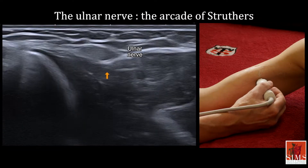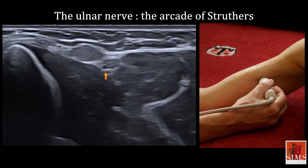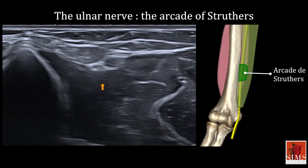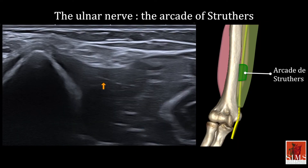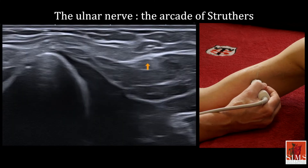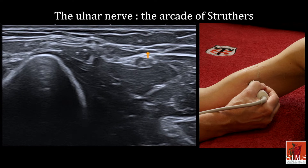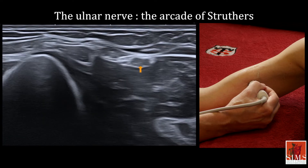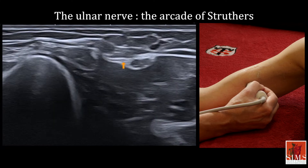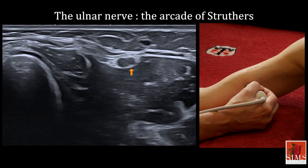Approximately 8 cm proximal to the medial epicondyle, some patients have a fibrous arcade called the arcade of Struthers, which has nothing to do with the ligament of Struthers. Using the elevator technique, we can sometimes observe hyperechoic thickening around the ulnar nerve, clearly visible here. This could explain why some ulnar nerve release procedures fail in the elbow.